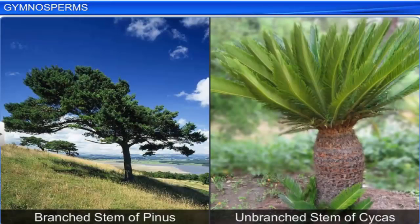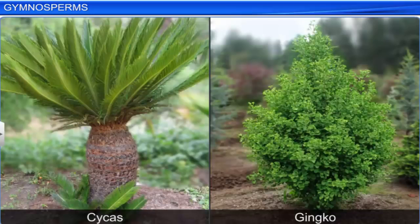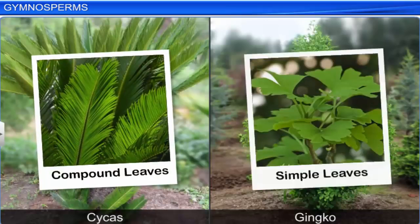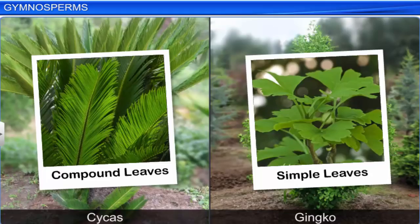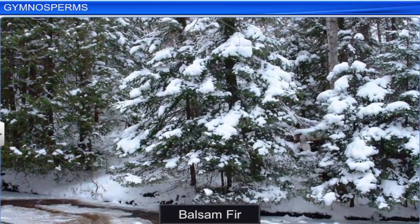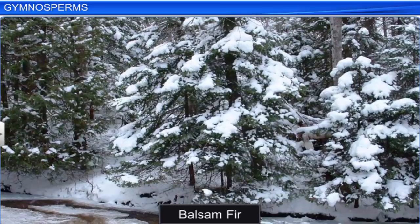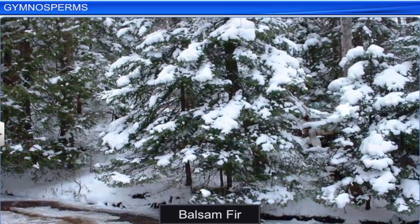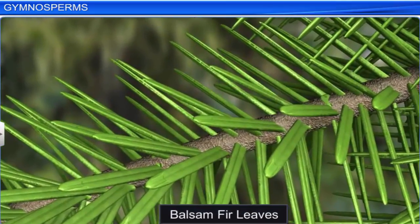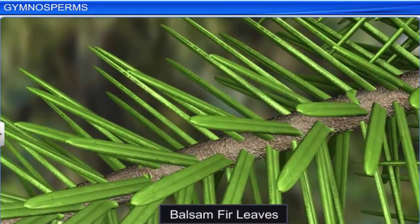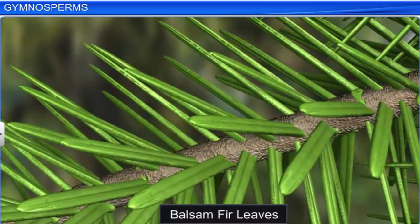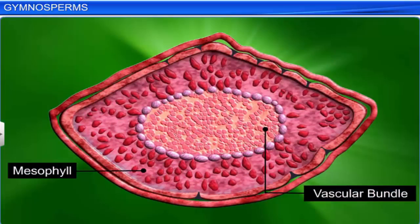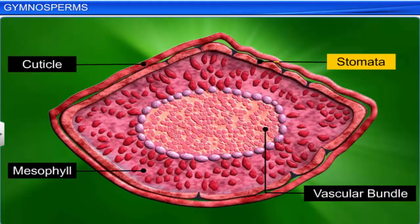The stems of a gymnosperm can be branched or unbranched, and the leaves can be compound, as in Cycas, or simple, as in Ginkgo. Moreover, these leaves are well adapted to withstand extreme climatic conditions, as seen in balsam fir. Its needle-like leaves reduce the surface area, which in turn reduces loss of water due to transpiration. Even the thick cuticle and sunken stomata on the leaves reduce the rate of water loss.